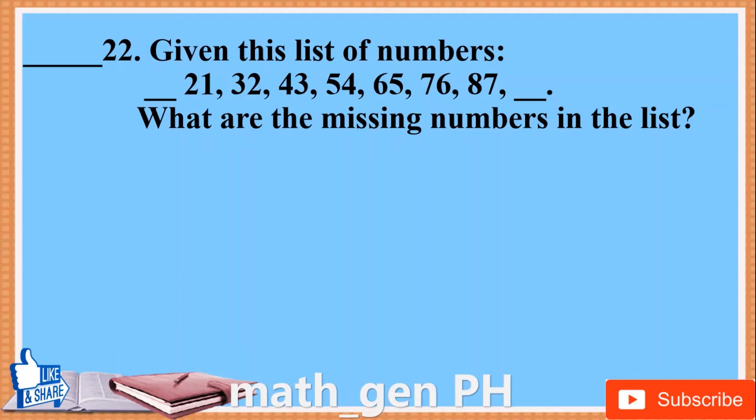Number 22. Given this list of numbers: blank, 21, 32, 43, 54, 65, 76, 87, blank. What are the missing numbers in the list?